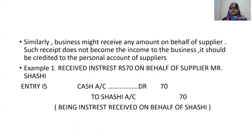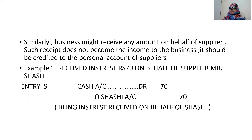Example: received interest Rs. 70 on behalf of supplier Mr. Shashi. Journal entry: cash account Dr. Rs. 70, to Shashi account Rs. 70. Narration: being interest received on behalf of Shashi. We are receiving Rs. 70 on behalf of Shashi — that is not our business income. Since we are receiving on behalf of the supplier Shashi, we credit Shashi's account. Had it been a payment, we would write Shashi account Dr. to cash account — but since it is a receipt, it is the reverse entry.